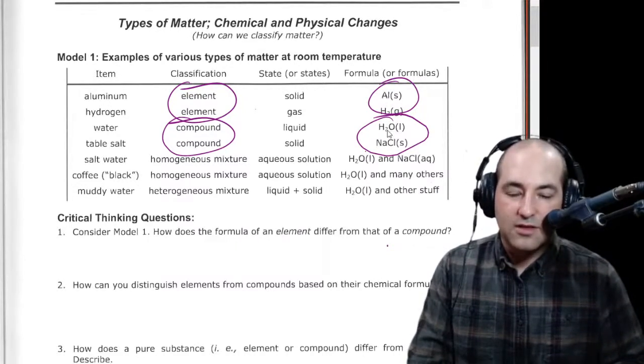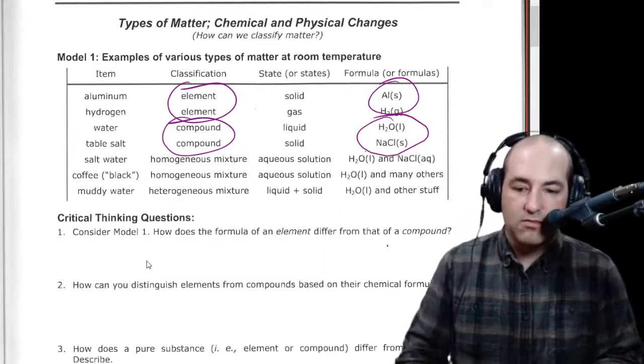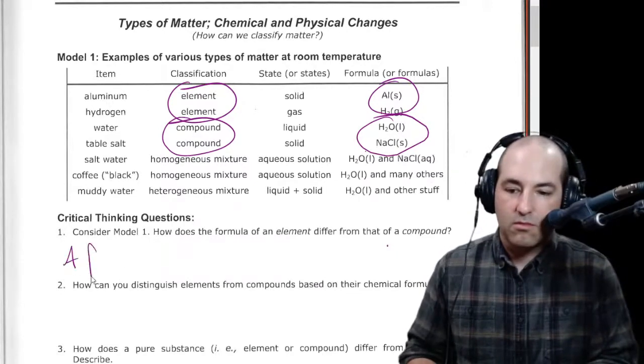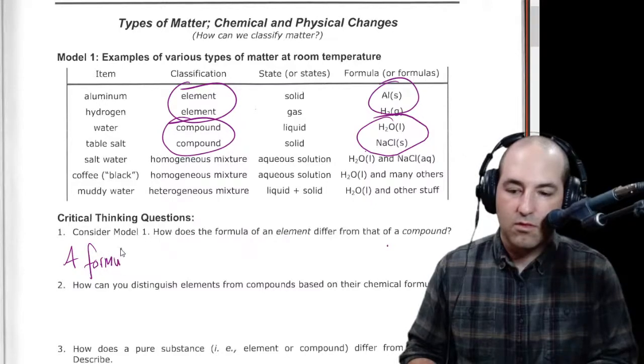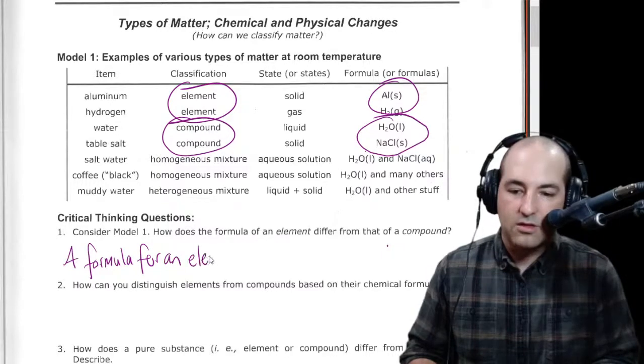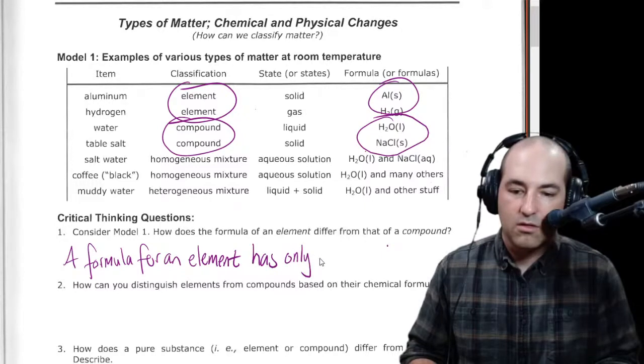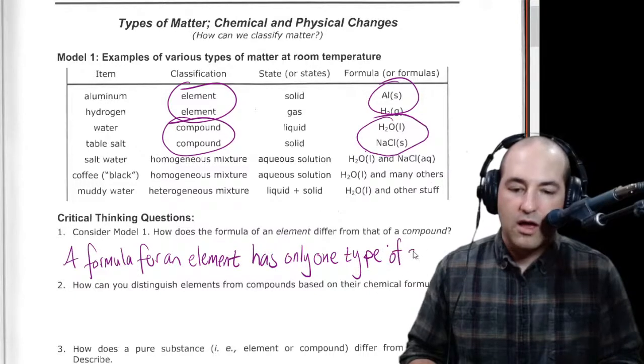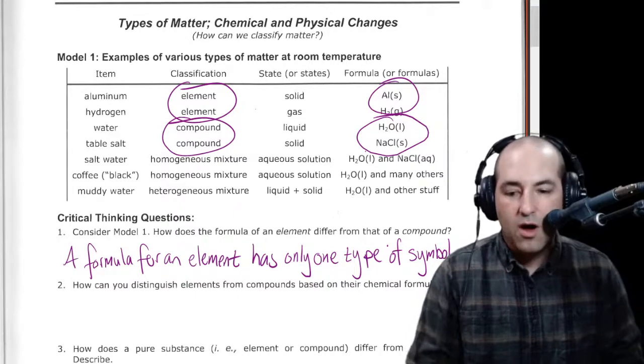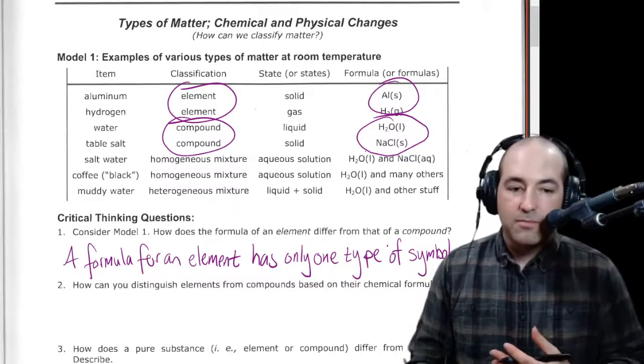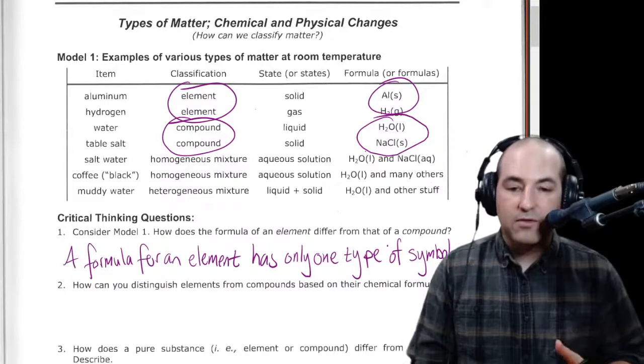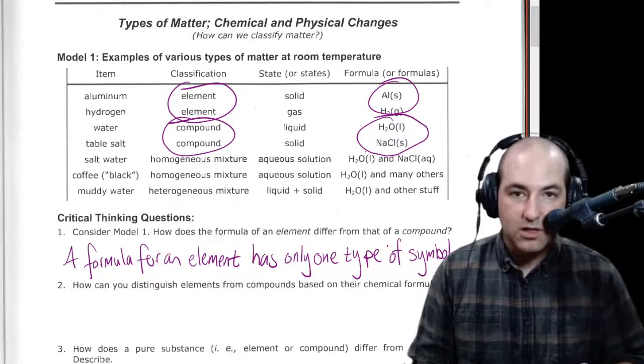And these have, in this case, two. So I might write a formula for an element has only one type of symbol, and so on, as I just talked about. So that's really the answer. And the point is that we only got that answer, we only got that information directly from the table. We didn't go look elsewhere.